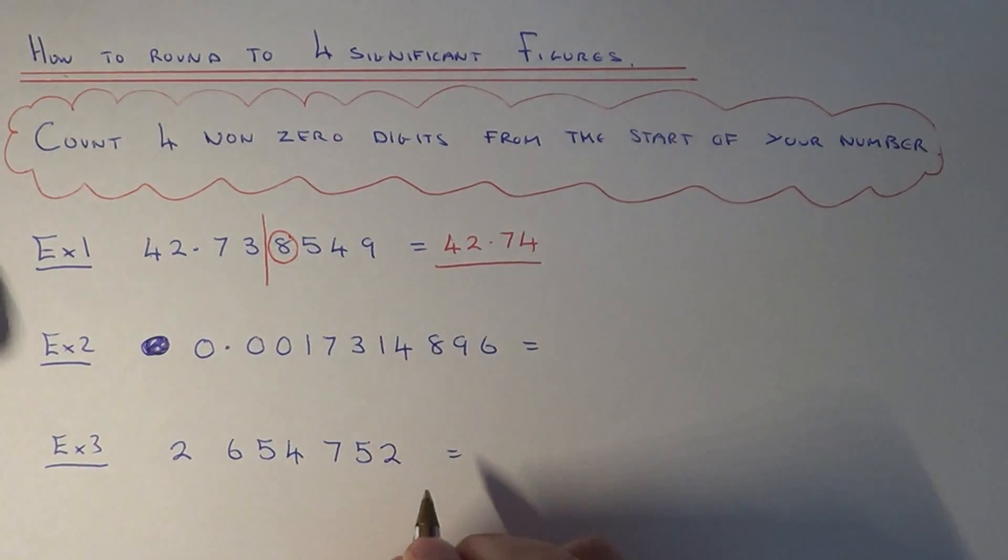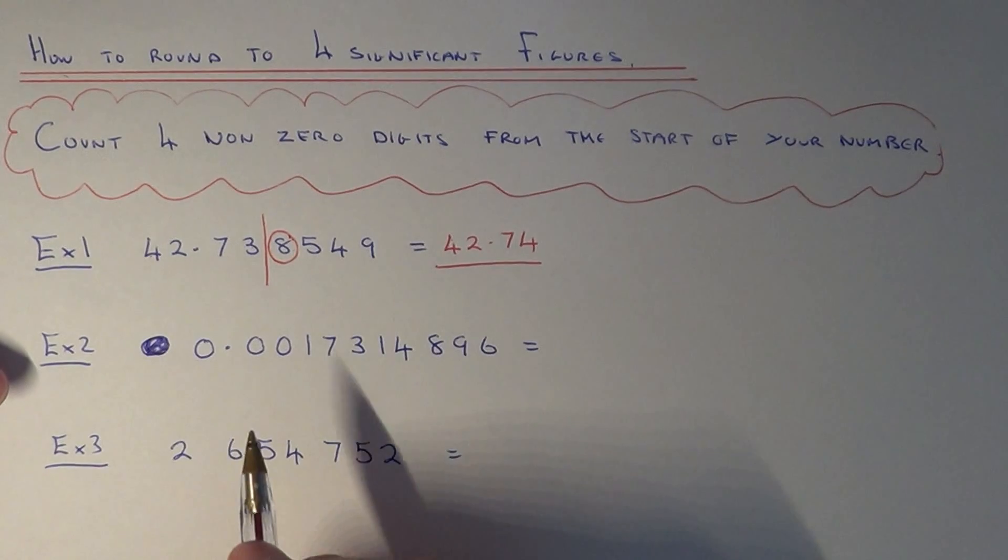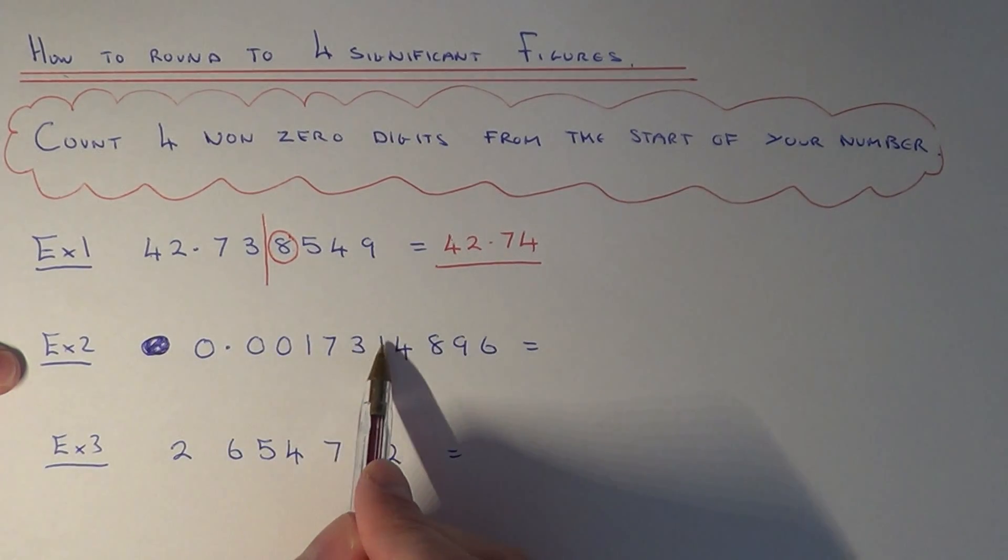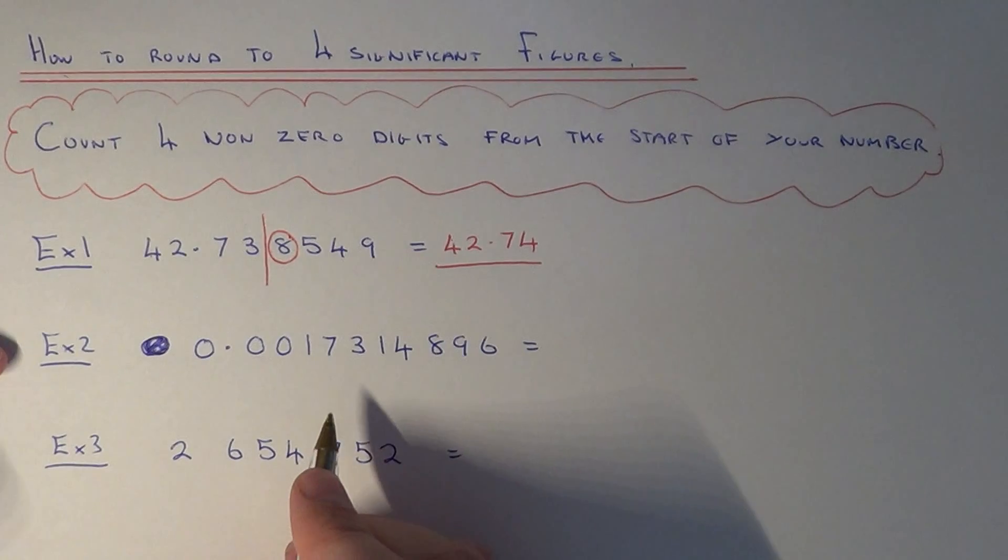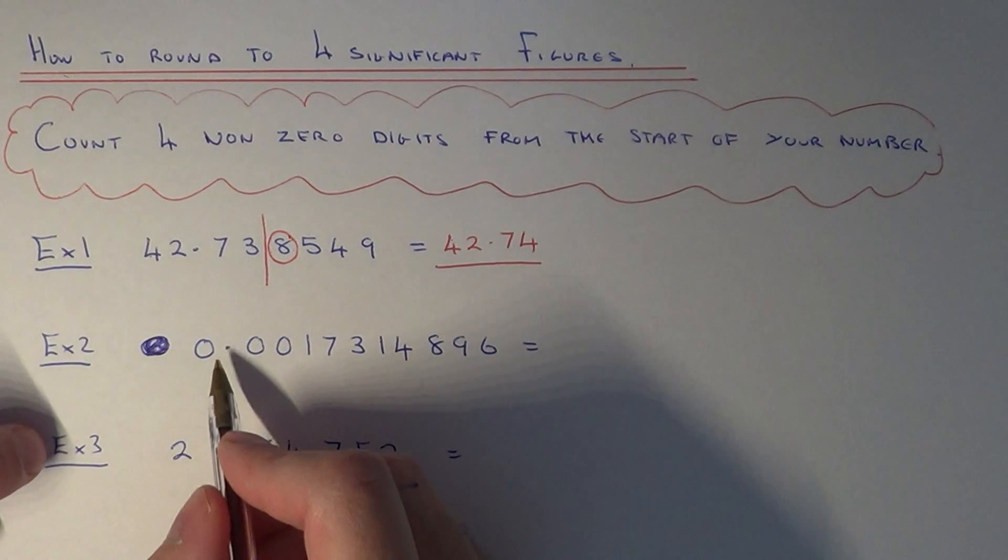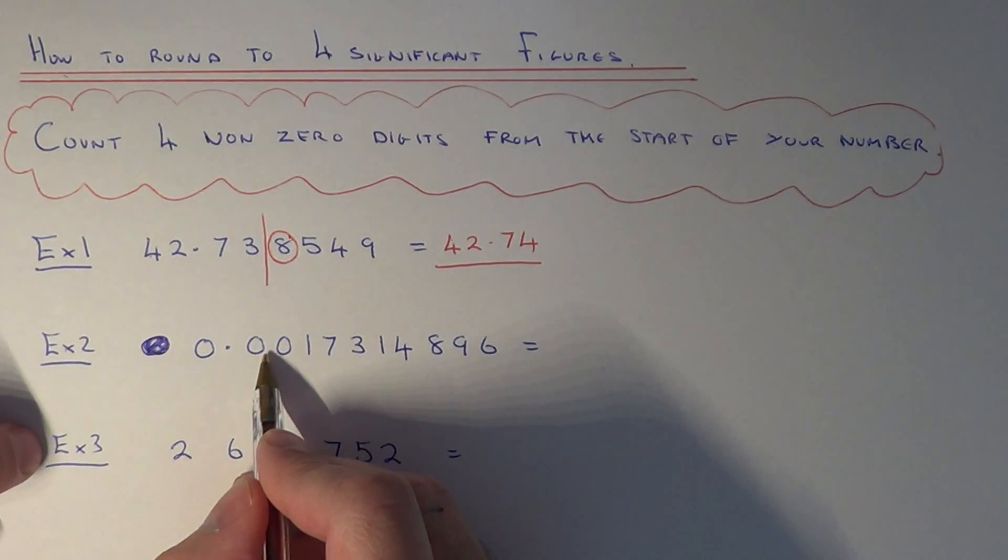Let's move on to example two. This time we've got 0.0017314896. Remember, four sig figs is four non-zero digits from the start of the number. So we need to ignore all these zeroes at the start.